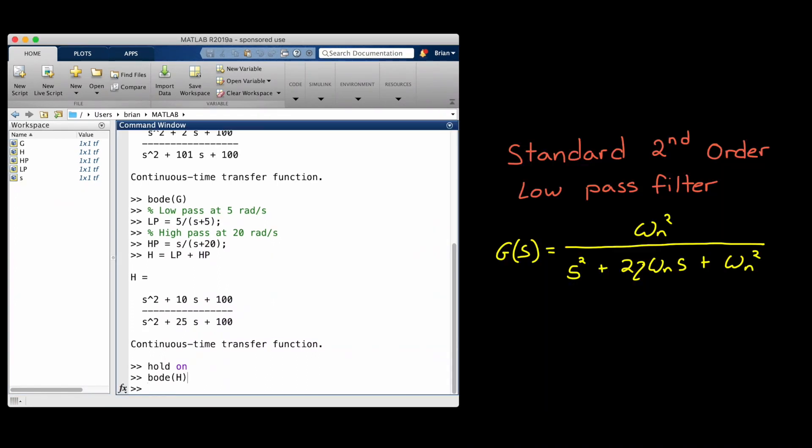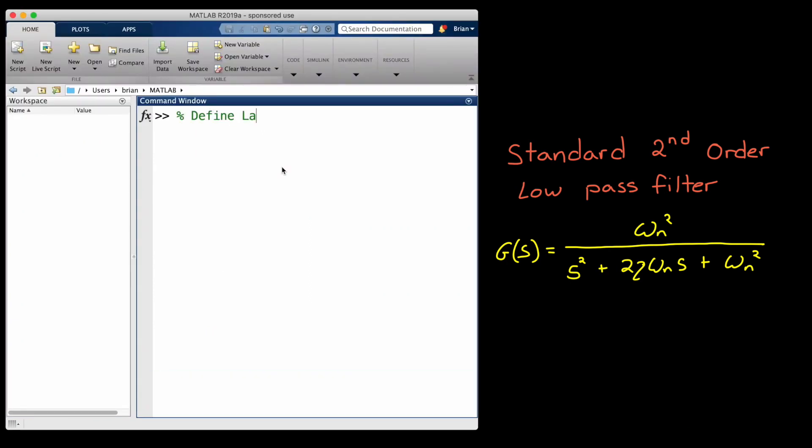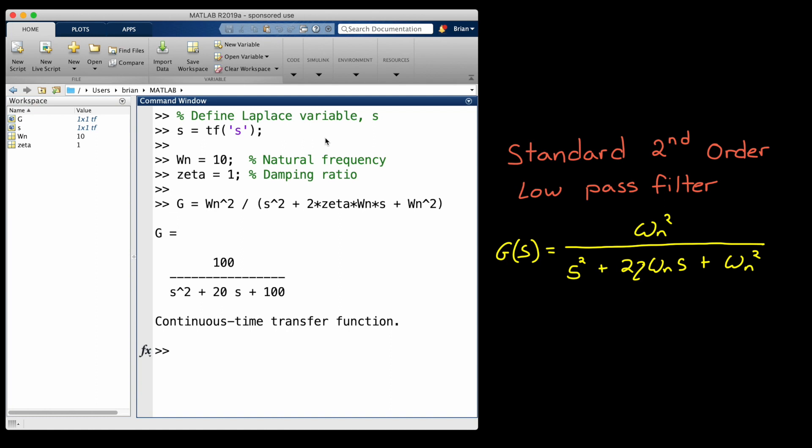Let's start with that standard second-order low-pass filter transfer function. The one that's just omega n squared divided by s squared plus 2 zeta omega n s plus omega n squared, where omega n is the natural frequency and zeta is the damping ratio.